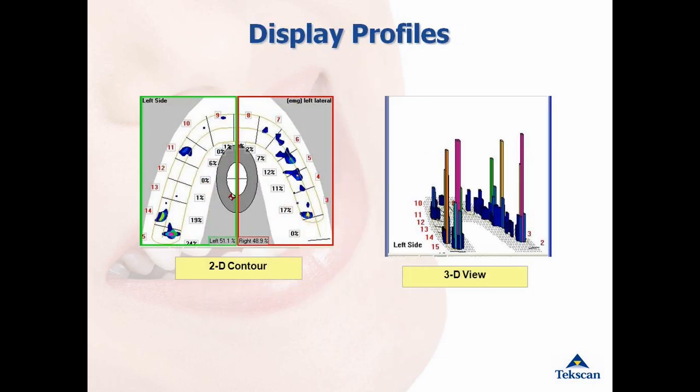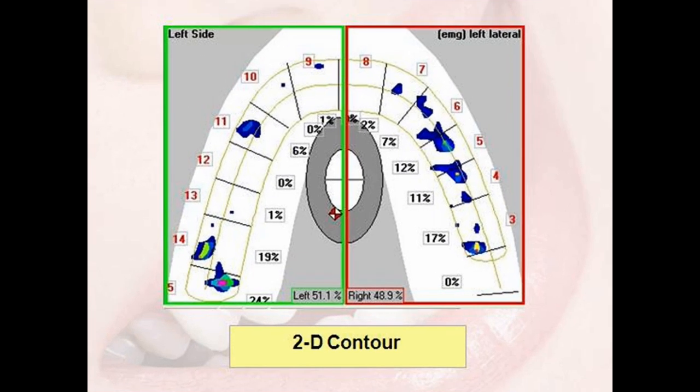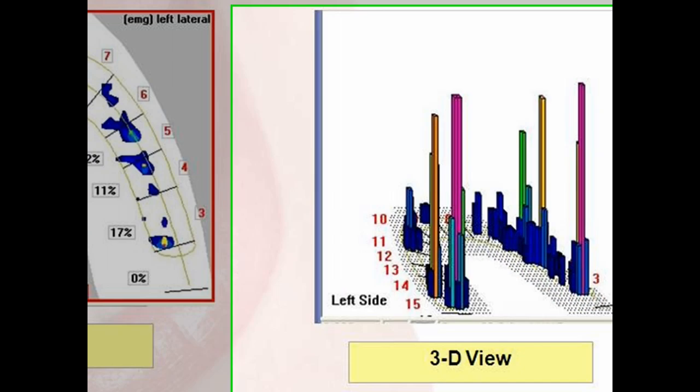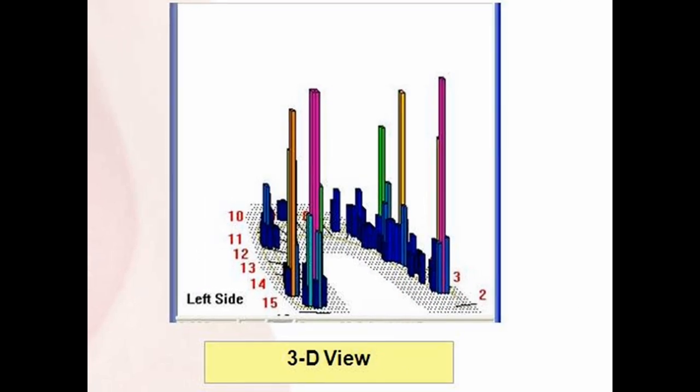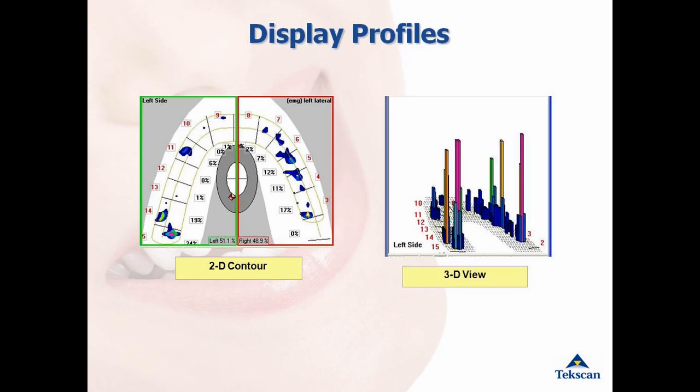T-Scan displays the data in many different ways. As you can see in this example, there is a 2D contour view that most closely resembles articulating paper marks. There is also a 3D view which is a great tool for patient education because you can see the height of the column correlating with the intensity of the force.